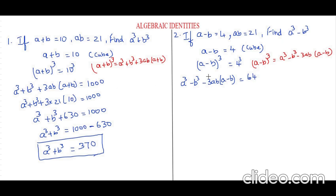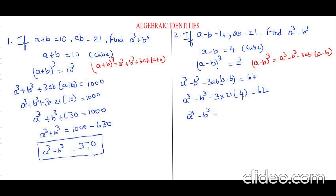Now, as in the previous question, we know the value of ab and a minus b. So let's apply: it is a cube minus b cube minus 3ab — the value of ab is 21 — times 21, and inside the bracket a minus b is 4, equals 64. So, keeping a cube minus b cube as such, minus 3 times 21 times 4, which is 252, equals 64.